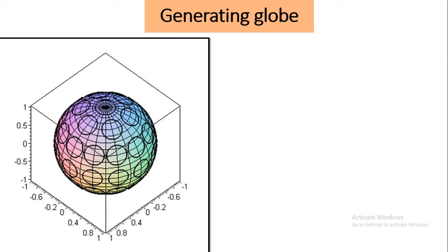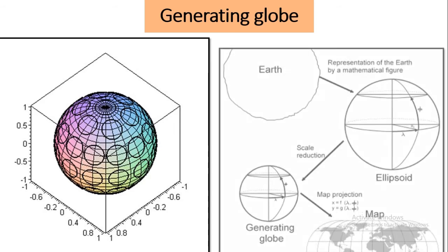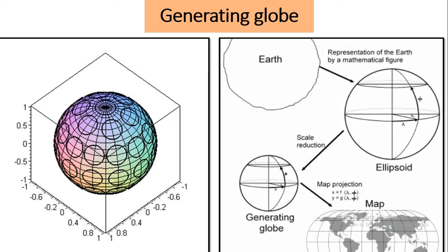For the accurate drawing of map projections, a generating globe is necessary. A generating globe is the globe on the basis of which the projection and network are drawn. The generating globe is three-dimensional — it is actually a replica of the earth.